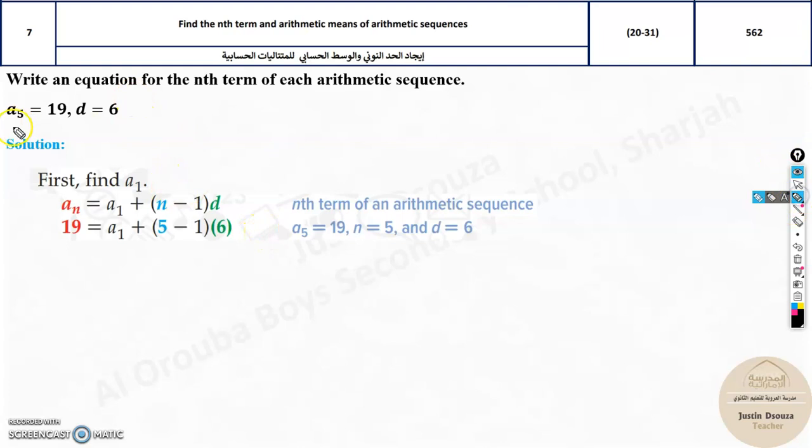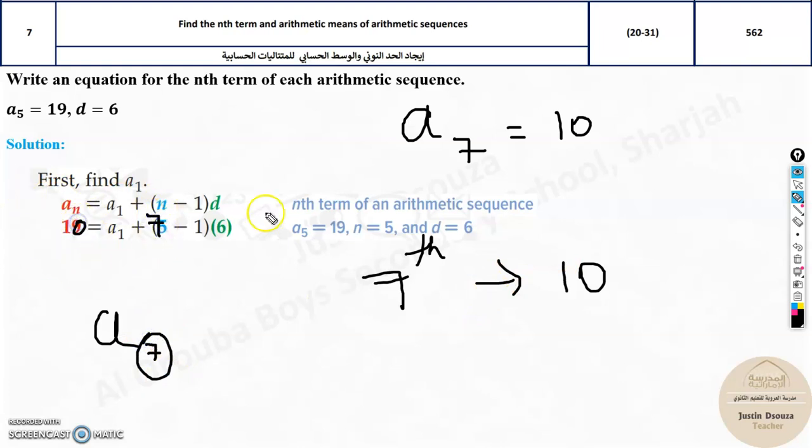Now, if you're thinking, why is this a_n? Whenever they mention, say, a_7 equals 10, that means the 7th term is equal to 10. You do not know the nth term. You can state this as the nth term. We can consider n as 7 and then substitute the value 10 over here. Okay? So, what will be the n value? n value will be 7. And this will be 10 in this example. So, that's what we have done.